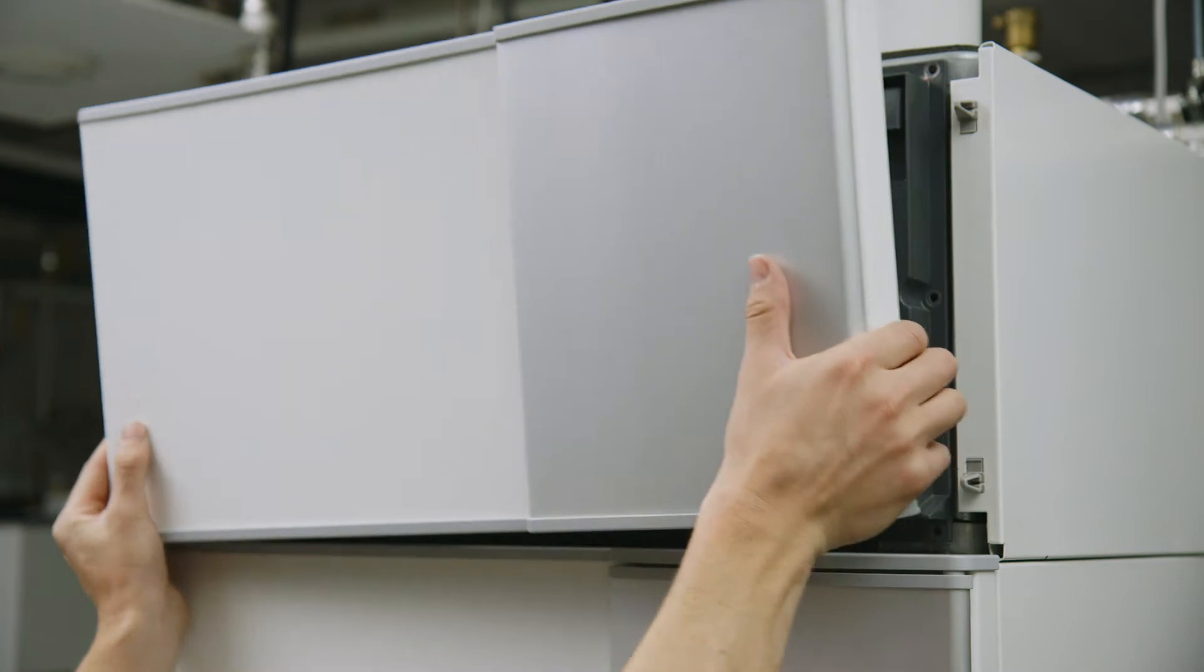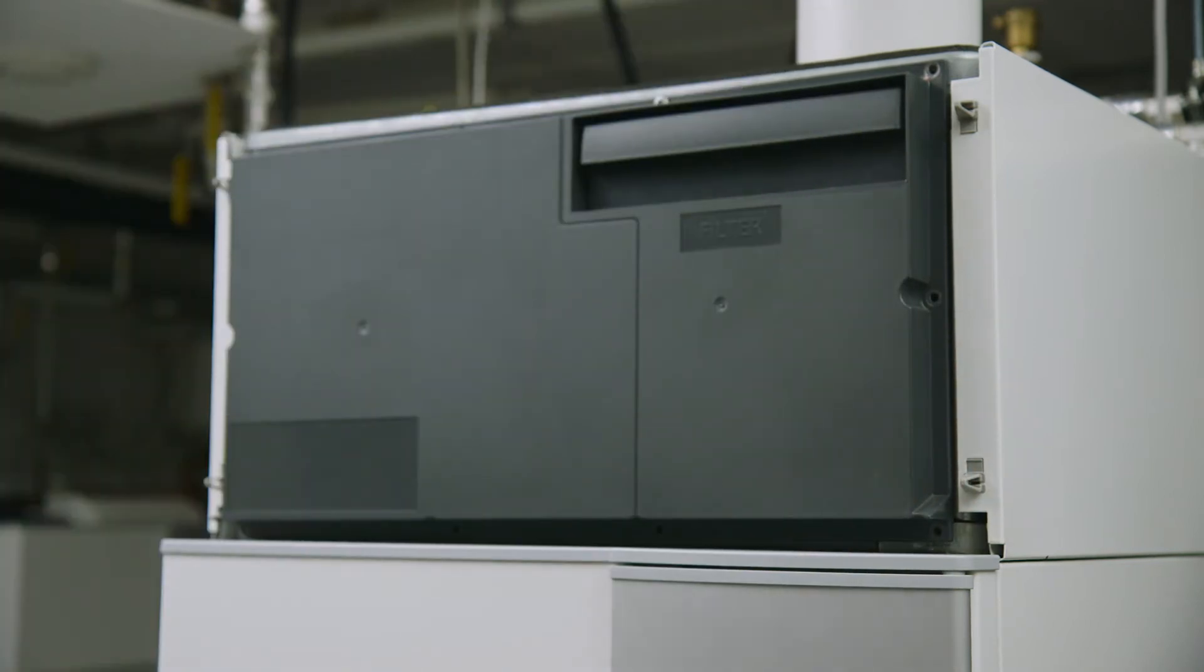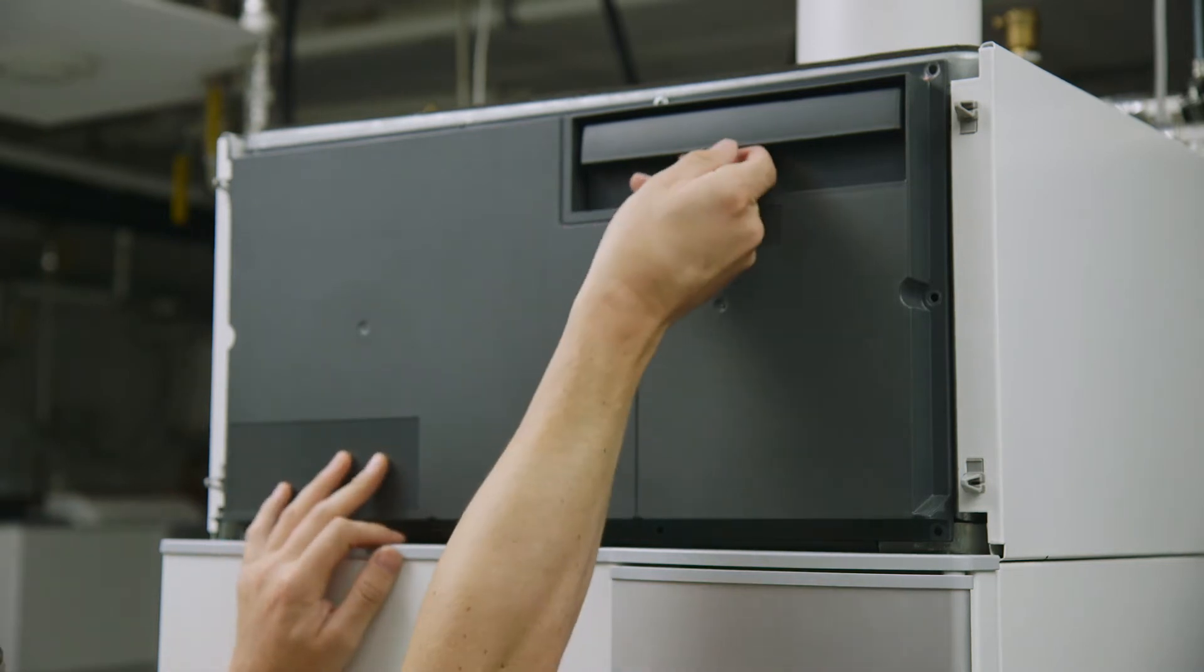Release the front top panel by carefully pulling it towards you from the bottom edge. You will now see the filter at the top right-hand side of the unit. Pull the filter unit out fully.